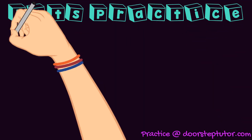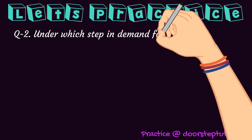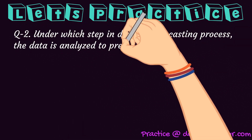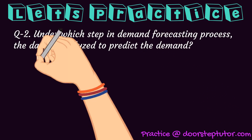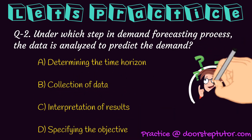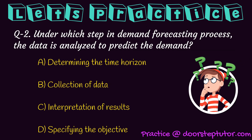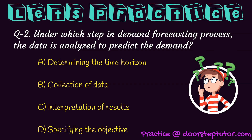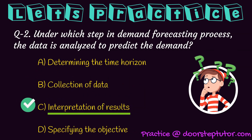The next question: under which step in the demand forecasting process is the data analyzed to predict the demand? Options include determining the time horizon, collection of data, and interpretation of results. Determining the time horizon is about deciding the production period; collection of data involves gathering information from various experts; and interpretation of results is where we analyze the collected data. So the correct answer is interpretation of results.